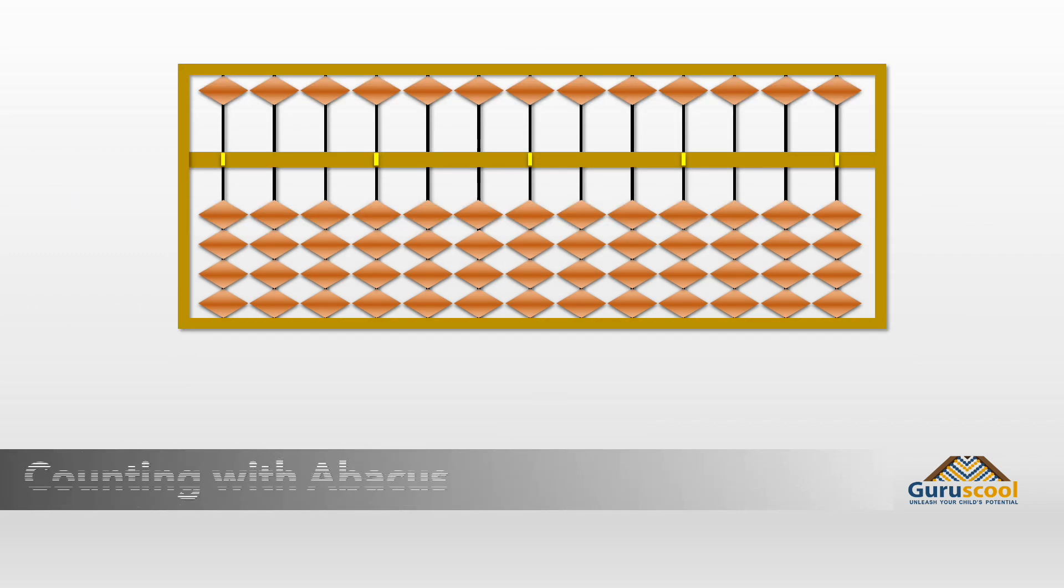The beads are counted by moving them upward and downward towards the bar. The bead is counted if it touches the bar. If no bead is touching the bar, that column is considered equal to zero.